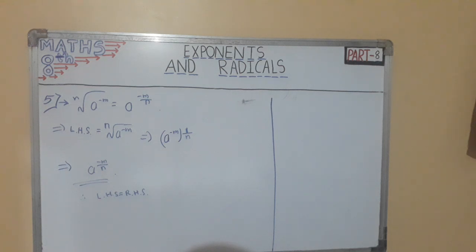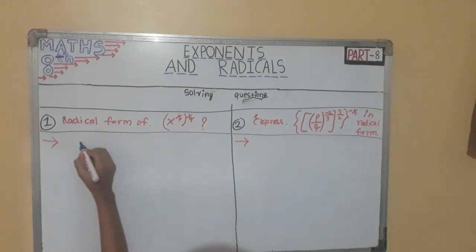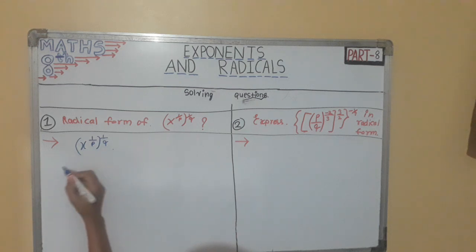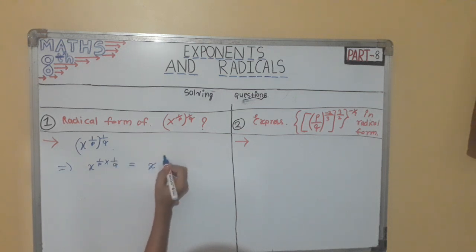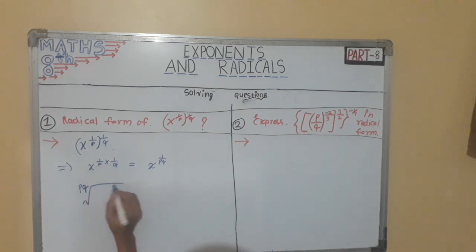Now we will solve questions based on radicals. Our first question is: express x raised to 1 by p whole raised to 1 by q in radical form. Given is x raised to 1 by p whole raised to 1 by q. We will multiply the powers: x raised to 1 by p into 1 by q, which equals x raised to 1 by pq. Now the power is in the form of 1 by pq, so we can write it as pq root of x. Therefore this is the radical form.